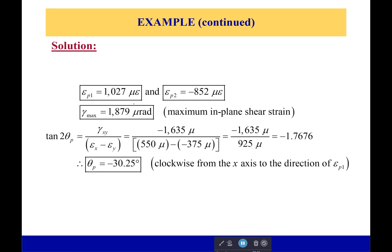So from that, we get our principal strains of being principal strain 1 being 1027 microstrains, principal strain 2 being negative 852, this being our max in-plane shear strain. And then to find the angle, we use everything we just calculated a little bit earlier and plug in this equation. And we get that it's going to be equal to 30.25 degrees, which is going to be clockwise from the x-axis to this direction.